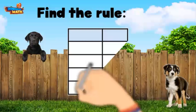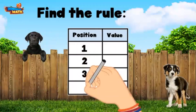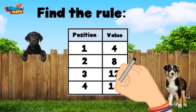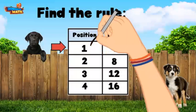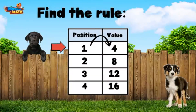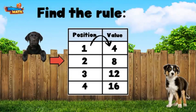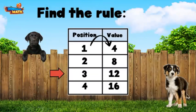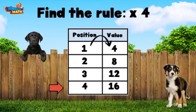This time we only have two columns: position and value. Let's look at the first position. How can we get from one to four? We can either add three or multiply by four. Remember, the same rule must work for each position. If we try adding three to the next position, we do not get eight. But if we multiply by four, it works. One times four is four, two times four is eight, three times four is twelve, and four times four is sixteen. The rule must be to multiply by four.